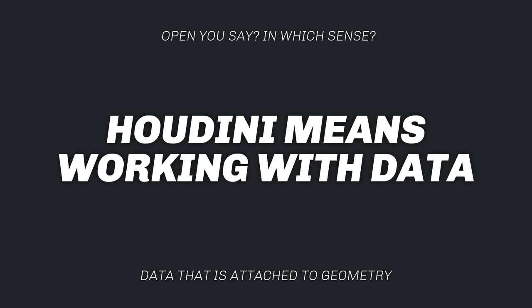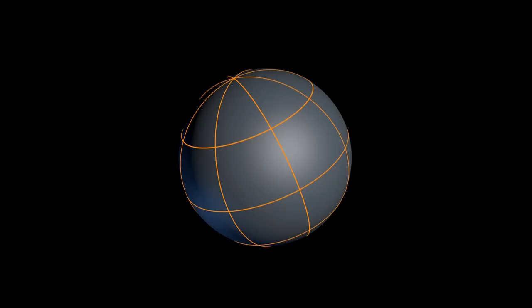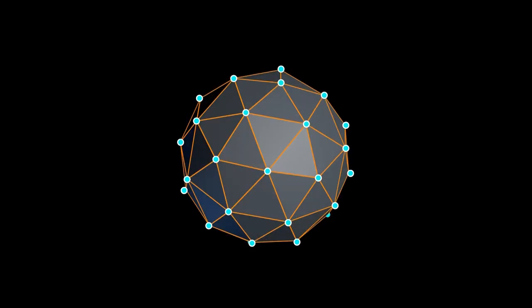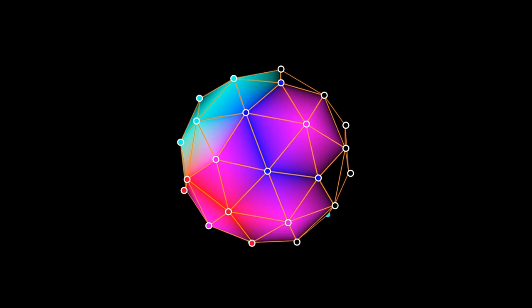So what does working with data mean inside Houdini? Inside Houdini, data is attached to geometry. A sphere, for example, is represented not as a perfectly round shape but approximated with points spaced uniformly on a surface, connected to form the mesh. Houdini allows you to attach data to every instance of that mesh — its points, connecting edges, and polygons. For example, attaching color data to points, then interpolating that color along edges, resulting in a colorized mesh.